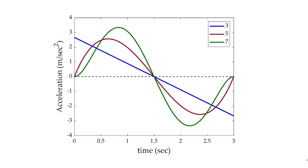Now let's take a look at the acceleration curves. The acceleration curve for blue ends up being a straight line. We have a more abrupt start and stop with red, and a more gradual start and stop with green.